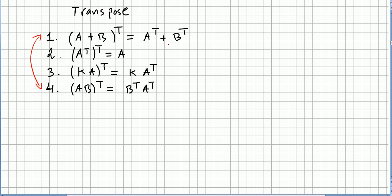(A + B) transpose is A transpose plus B transpose. The transpose of a transpose matrix is the same matrix. Also, where K is a scalar, a matrix multiplied by a scalar transposed is the same as K times A transposed. And again, the dangerous one: (A times B) transpose is equal to B transpose times A transpose.